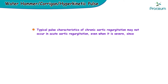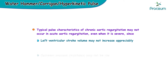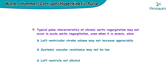The typical pulse characteristics of chronic aortic regurgitation may not occur in acute aortic regurgitation, even when it is severe, since the left ventricular stroke volume may not increase appreciably, the systemic vascular resistance may not be as low, and the left ventricle may not be as dilated — as all of these might occur in chronic aortic regurgitation.